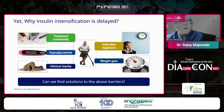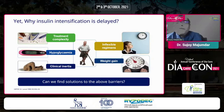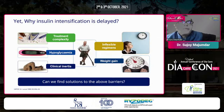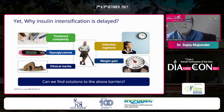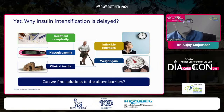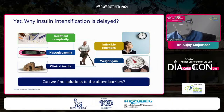Why is insulin intensification delayed? There are several reasons. One is inflexible regimens — patients find it difficult to stick to a regimen requiring strict timing and taking insulin half an hour before meals, as with conventional insulins. Associated risks of hypoglycemia and weight gain further contribute to patient reluctance. Complex treatment regimens requiring different doses at different times of day make it difficult for patients to follow properly. These are significant barriers to appropriate intensification.